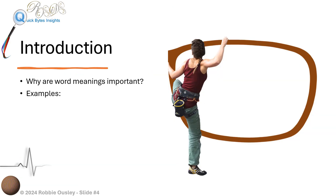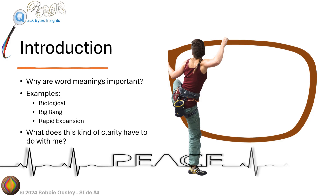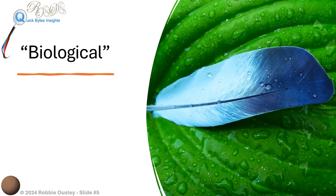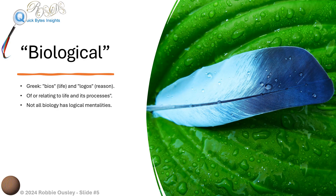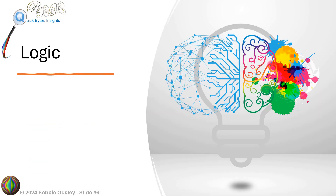Why are word meanings important? What is the word 'biological'? The word biological comes from the Greek words 'bios' (life) and 'logos' (reason), so biological literally means 'of or relating to life and its processes.' However, not all biology has logical mentalities — for example, plants do not have brains or nervous systems, so they cannot think logically. Even animals which do have brains do not always think logically.